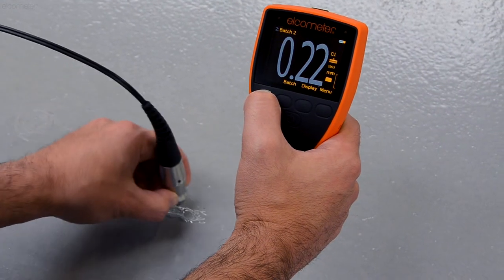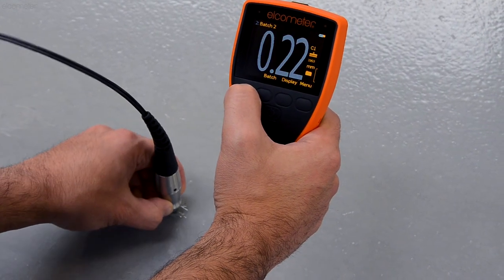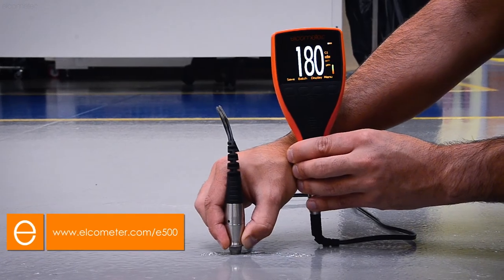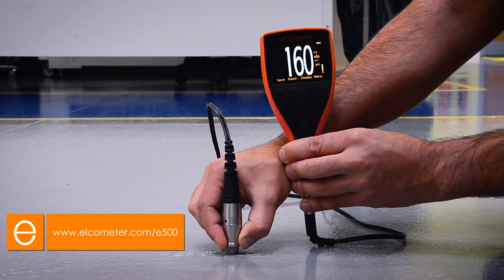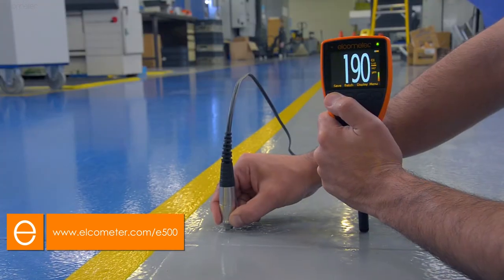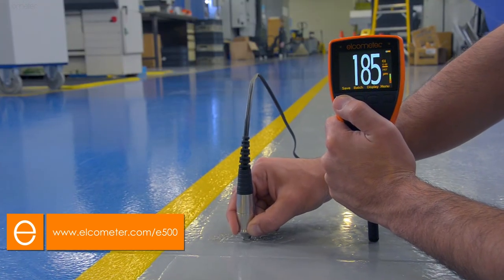For more information on the Elcometer 500 coating thickness gauge, or to watch one of our other Elcometer 500 videos, click the pop-out in the top right of the screen, or visit Elcometer.com/E500.